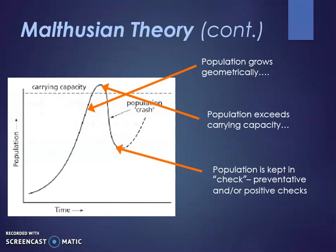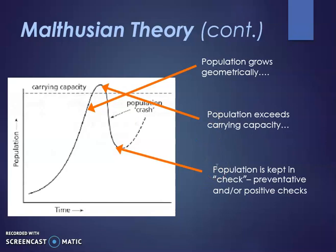This chart visualizes the concept with population rising over time on the axes and a dotted line representing carrying capacity. Malthus believed that if population breaches carrying capacity, a check — positive or preventative — must occur. So if population gets too high, famine would be a good thing, or perhaps tax credits to slow the rate of having children, or even war.